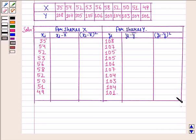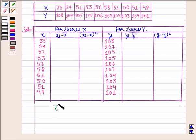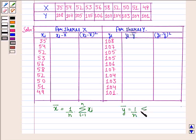Now we make a table — this is for shares X and this is for shares Y. The first column contains the Xi values given in the question, and similarly the Yi values. We then find Xi minus X-bar and Yi minus Y-bar, followed by (Xi minus X-bar) squared and (Yi minus Y-bar) squared. The mean X-bar equals 1/N times the summation of Xi, and the mean of Y equals 1/N times the summation of Yi.